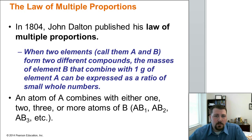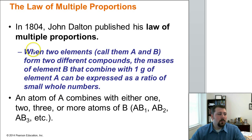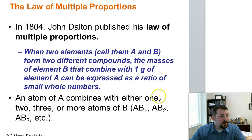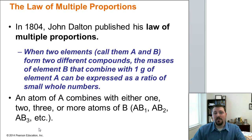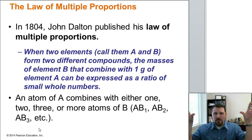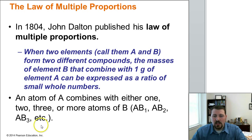The law of multiple proportions, proposed by Dalton in 1804, states that when two elements form different compounds, the masses of element B combining with 1 gram of element A can be expressed as a ratio of small whole numbers. In other words, atoms combine in whole numbers — AB1, AB2, AB3 — not fractions like AB2.5 or AB0.36, because you can't have a fraction of an atom. For example, carbon dioxide has a mass ratio of 2.67 grams of oxygen per gram of carbon, and carbon monoxide has 1.33 grams of oxygen per gram of carbon. The ratio of those two values is exactly 2 — a small whole number, as predicted.